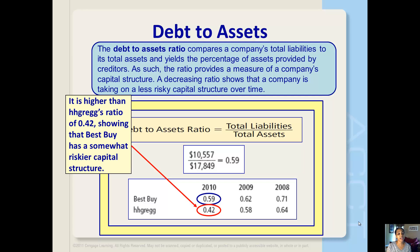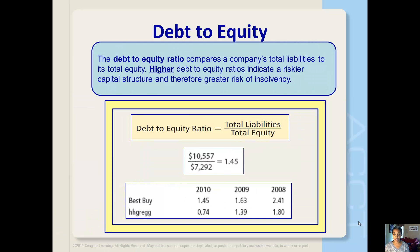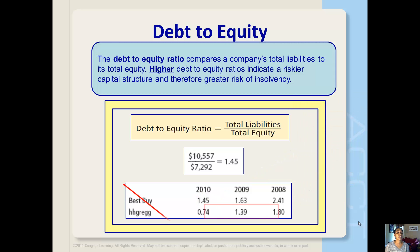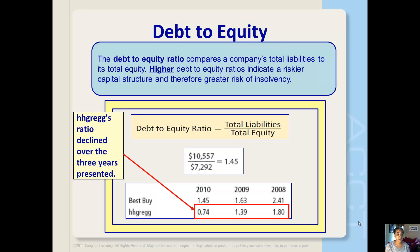But Best Buy's ratio is still higher than HH Gregg's, showing that Best Buy still has a somewhat riskier capital structure. The debt to equity ratio compares a company's total liabilities to its total equity. Higher debt to equity ratios indicate a riskier capital structure and therefore greater risk of insolvency. Companies with higher debt to equity ratios are also said to be highly leveraged. Best Buy has a debt to equity ratio of 1.45, which is lower than the last two years, so their capital structure is becoming less dependent on liabilities and therefore less risky. HH Gregg's debt to equity ratio has also declined over three years and is almost half of Best Buy's.